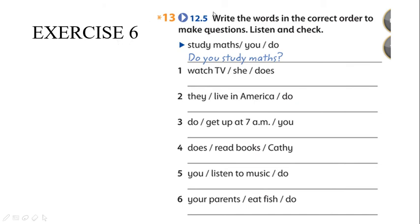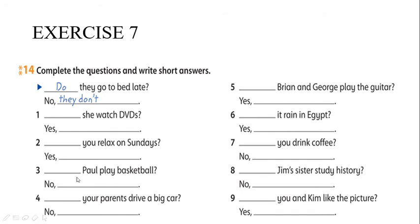Exercise six: write the words in the correct order to make questions. For example: 'study, maths, you, do' becomes 'Do you study maths?' And 'watch, TV, she, does' becomes 'Does she watch TV?' Exercise seven: complete the question and write short answers. For example, 'She watches DVDs' — she is singular, so we use 'does': 'Does she watch DVDs? Yes, she does.'